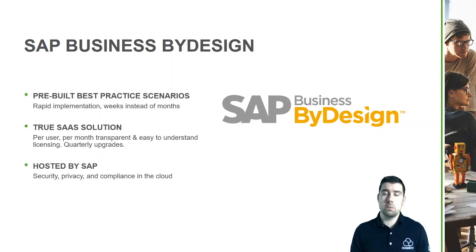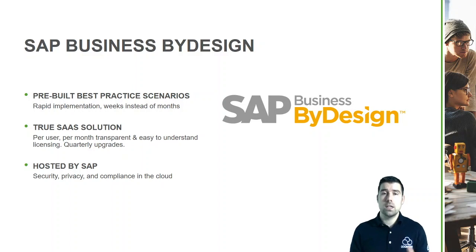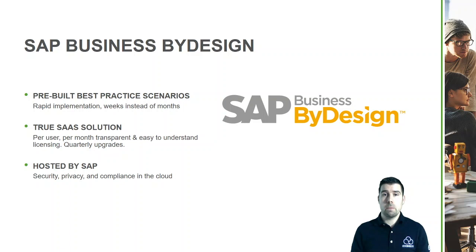Moving on to SAP Business by Design, the first point to mention is that the deployment method is quite different from Business One. By Design revolves around a number of pre-built scenarios based on best practice within the system, which can then be tailored to individual business requirements. This means it's very quick to roll out — we're really talking weeks rather than months for an end-to-end ERP deployment — and it means we're not reinventing the wheel, which gives a lot of structure to businesses.